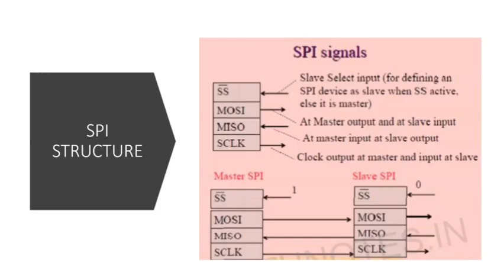The various signals used in SPI are: Slave Select (SS), MOSI (Master Out Slave In), MISO (Master In Slave Out), and SCLK (Serial Clock). The SS line, which is active low, is used to select a particular slave by setting it to zero. MOSI is the line through which the master sends data to the slave, and MISO is the line through which the master receives data. The clock is provided by the master.